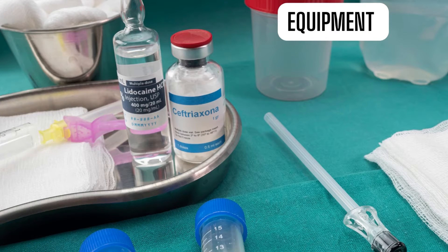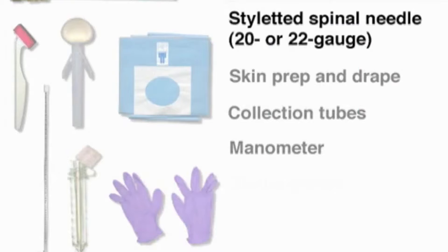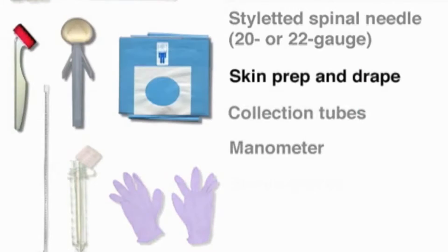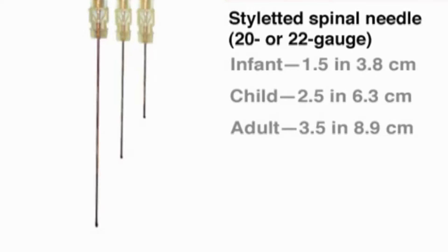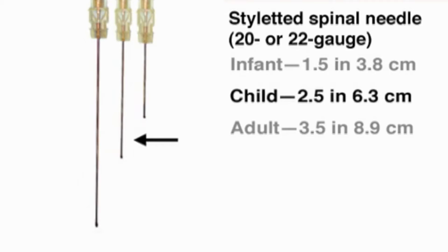Before performing the lumbar puncture, you will need a commercially available tray containing the necessary supplies: a spinal needle with a stylet, equipment for skin preparation, drapes, collection tubes, and in some cases a manometer. Typically a 20- to 22-gauge needle is used, with lengths ranging from 1.5 inches (3.8 cm) for infants, 2.5 inches (6.3 cm) for children, and 3.5 inches (8.9 cm) for adults. You will also need sterile gloves.